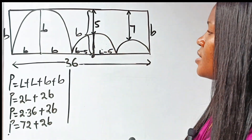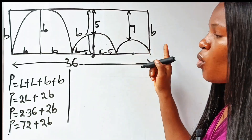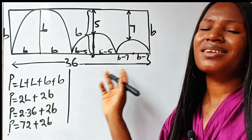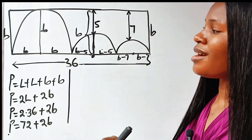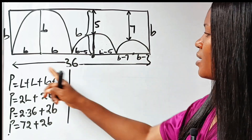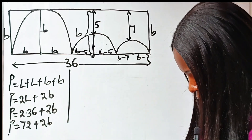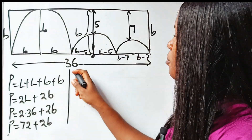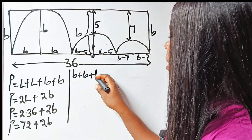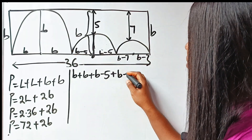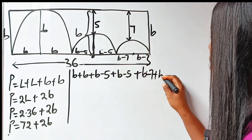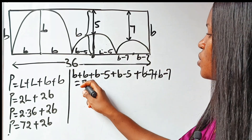Similarly, if this is the center of this one, then this will be B minus 7 and this will be B minus 7. Notice that all these lengths are in terms of the breadth, which is the main thing we are trying to find. We are given the length to be 36, so: B plus B plus (B minus 5) plus (B minus 5) plus (B minus 7) plus (B minus 7) is equal to 36.